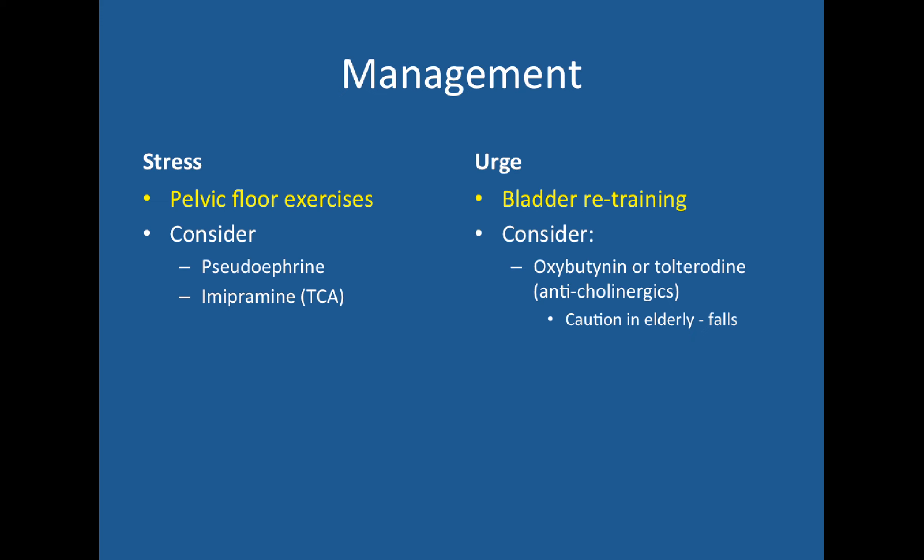For management, the highlighted exam favourites are key. For stress incontinence — typically a woman two to three years post-childbirth with leakage on laughing or coughing — the management is pelvic floor exercises. You can then consider alpha-mimetic drugs such as pseudoephedrine or TCAs. For urge incontinence, the buzzword is bladder retraining. You can then consider anticholinergics such as oxybutynin or tolterodine, but be very careful in older patients as these can significantly increase fall risk.